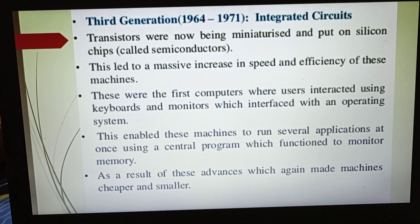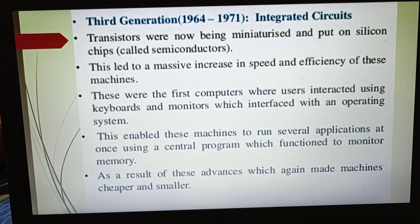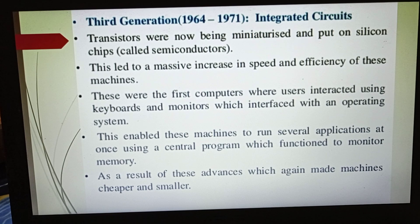High-level languages were used, for example Basic, C, C++, and Java. Memory capacity increased, and magnetic hard disk was used for secondary storage. In this generation, computers could run programs invoked by multiple users — that is, multiple users could work at a time.